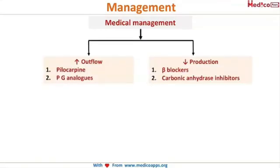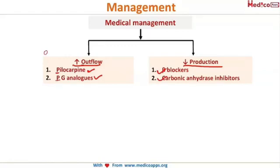There are two types of drugs: those which increase the outflow of aqueous humor, and those which decrease its production. The drugs that increase outflow are pilocarpine and prostaglandin analogues — both start with 'P' to help remember they are for outflow. The drugs that reduce production are beta blockers and carbonic anhydrase inhibitors.